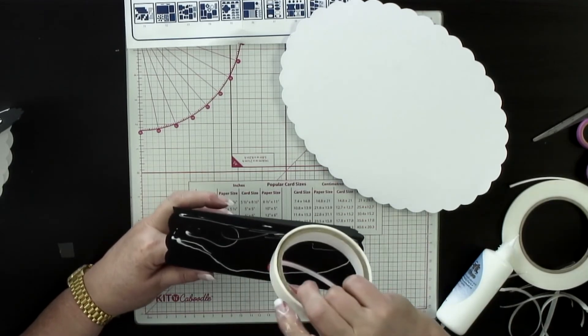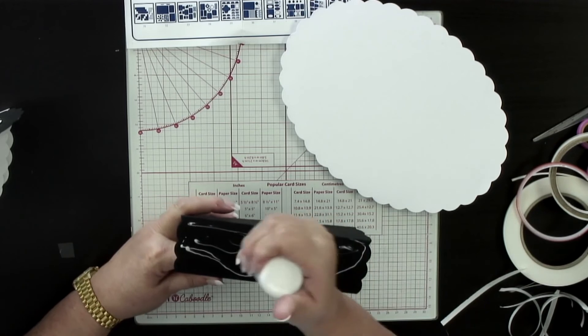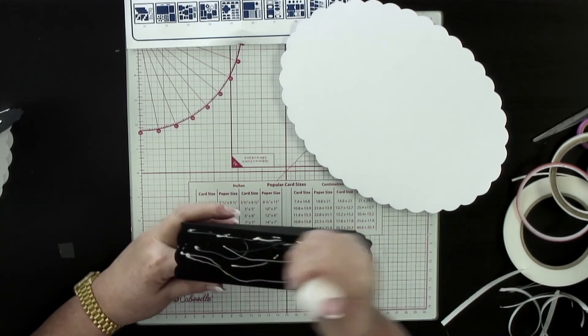And then to glue it all together make sure that you do this with the main part of the card touching your glass mat.